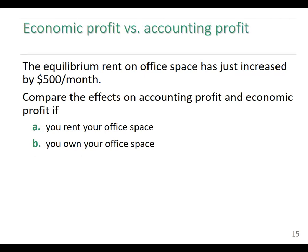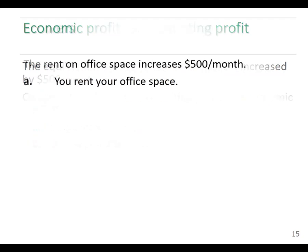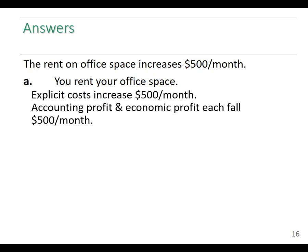Here's a problem: you can rent an office space for $500. Think about what will be the effect on accounting profit and economic profit. Stop the video before I go over the answer. If you rent, the explicit costs go up by $500 a month, so accounting profit goes down by $500. Economic profit will fall by the same amount.